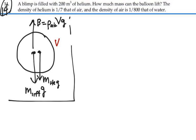So we have, based on the summation of forces in the y direction, our buoyant force minus the weight of the helium minus the weight of the balloon or the weight of the lift that we wish to lift will be equal to zero.